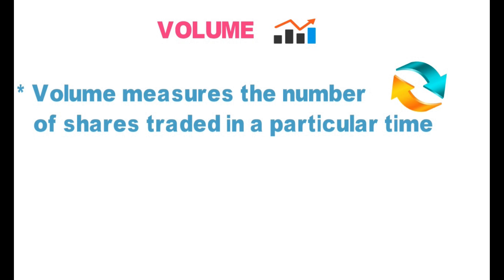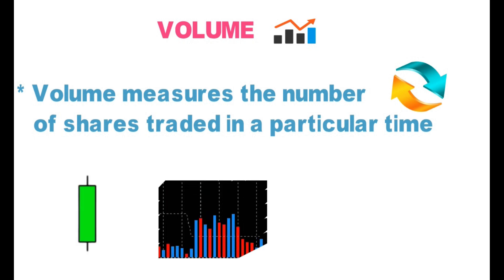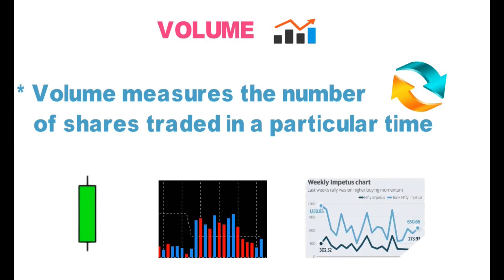Do you know the three important raw data which we get from the market? That is price, volume, and breadth. Price gives us open, high, low, and close. Volume shows the number of shares traded. Breadth shows the number of shares in advance and the number of shares in decline.